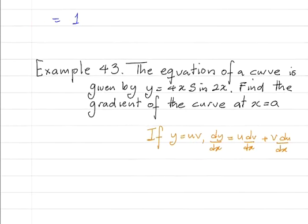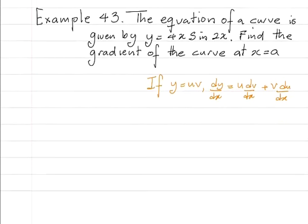Equation of a curve. Example 43 says the equation of a curve is given by y is equal to 4x sine 2x. Find the gradient of the curve at x is equal to a. Well, dy by dx is the gradient function — the first derivative is the gradient function, and it can be used to find the gradient at any value of x. The curve y equals 4x sine 2x is a product, so we apply the product rule.